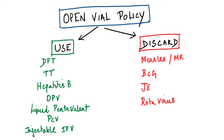Open vial policy applies only for DPT, TT, hepatitis B, OPV, liquid pentavalent, PCV, and injectable IPV. These vaccines, once opened, can be reused for up to 28 days in subsequent sessions provided conditions are met.